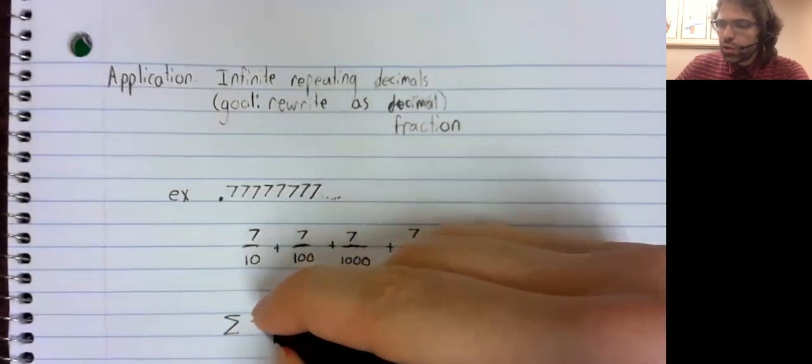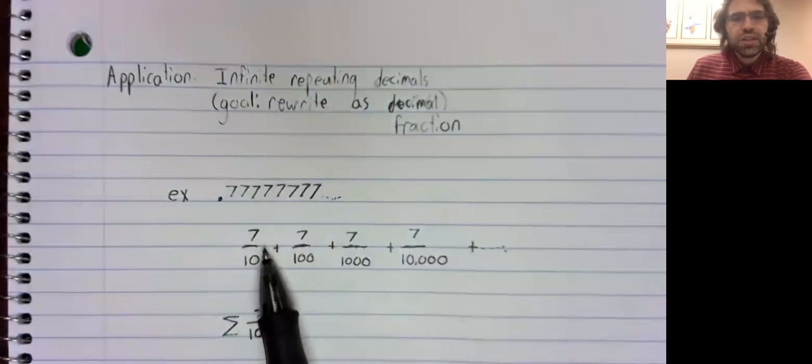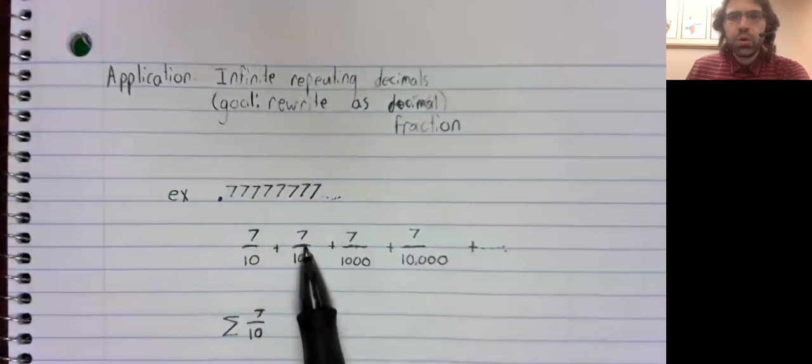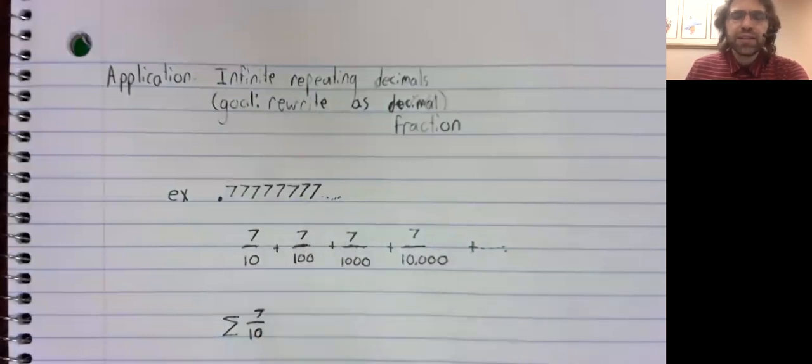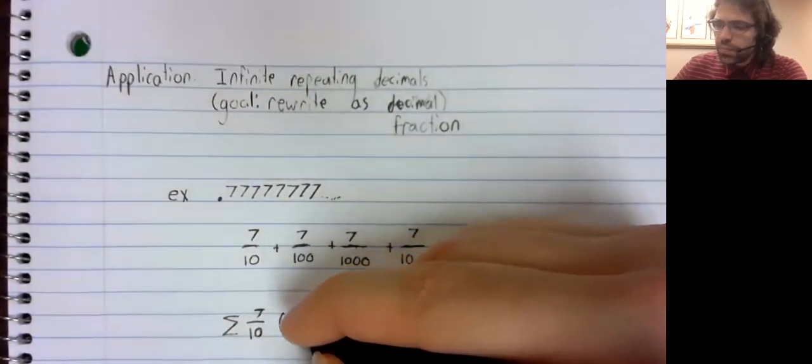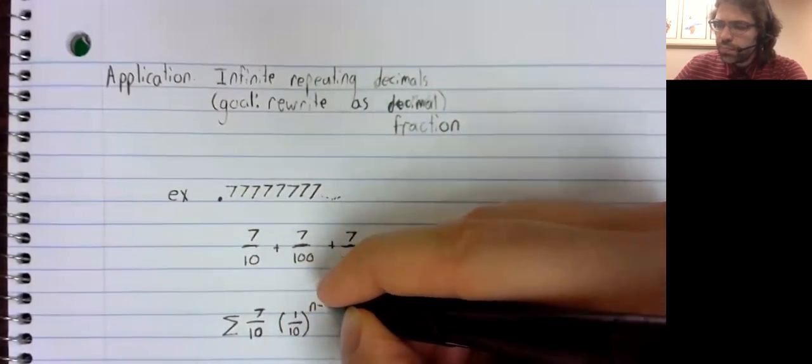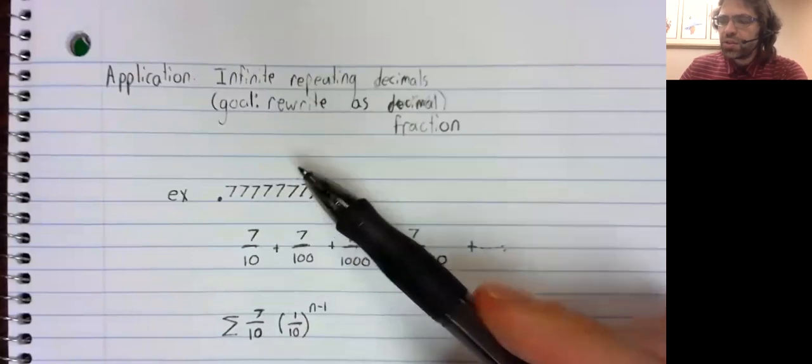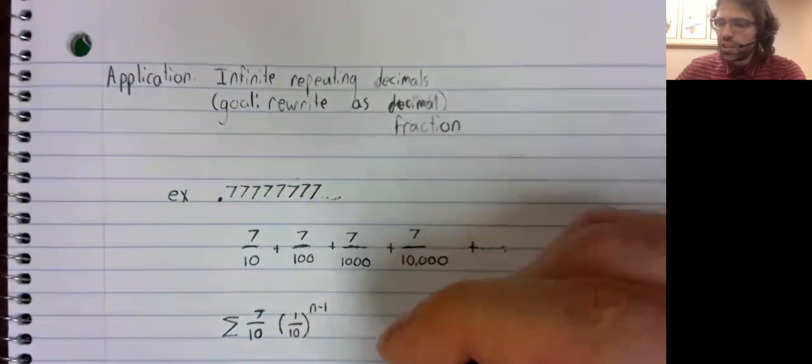Our first term is seven-tenths. And then to go from here to here, we multiply by one-tenth. To go from here to here, we multiply by one-tenth, and so on. This is a geometric series.